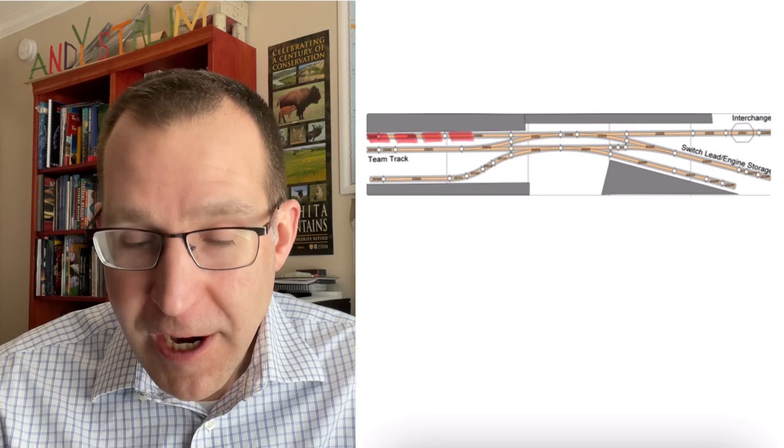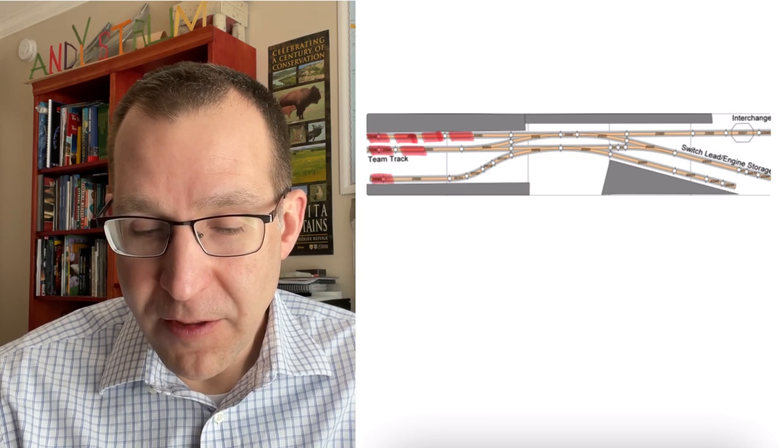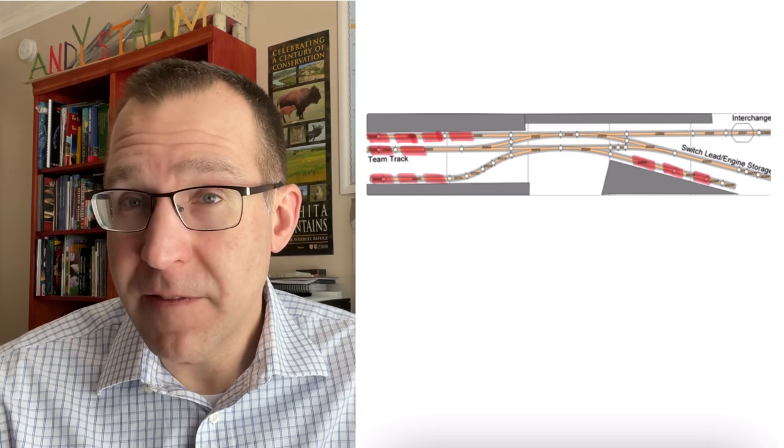I can also do probably a couple cars on the team track and then probably three on the industry on the bottom left. And then the industry on the bottom right would also have probably three car spots. So that would give me a total of about 12 car spots on the layout for destinations for various rolling stock.